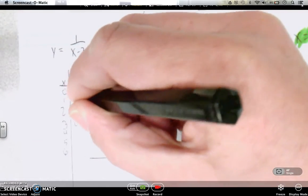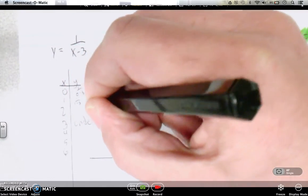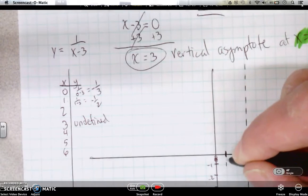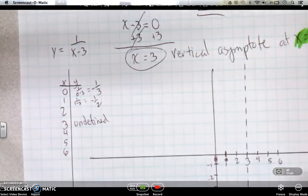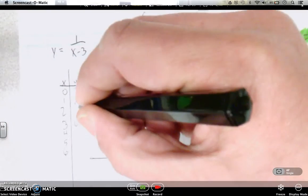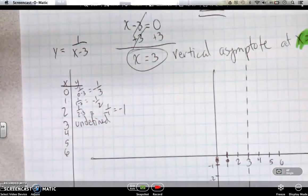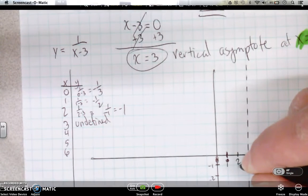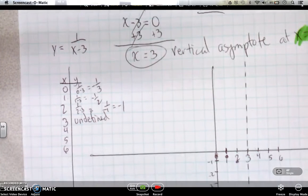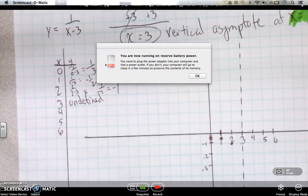Let's plug in 1. We get 1 over 1 minus 3, which is negative 1 half. So we go over to 1 and then down a half. Plug in 2. We get 1 over 2 minus 3, which will be 1 over negative 1 or negative 1. All righty. So 2 and negative 1. So those points are all really close.